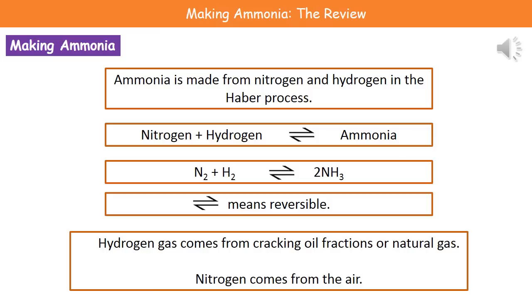To make ammonia we use a process called the Haber process. In the Haber process, nitrogen and hydrogen react to make ammonia. Looking at the word equation, you'll notice it has a special arrow — half going right, half going left — which is the symbol for a reversible reaction, meaning the reaction can go both ways. Hydrogen comes from cracking oil fractions or from natural gas, and nitrogen comes from the air, which is 78% nitrogen.